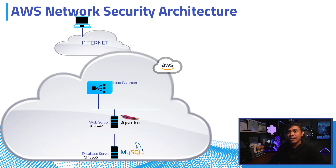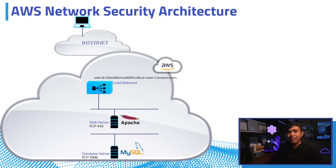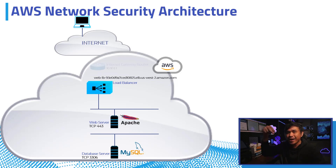The load balancer has a domain name or DNS and this is accessible by clients. But for this to be successful, the IP address of the load balancer must be translated and must be routed to the internet. This is where the internet gateway comes in.